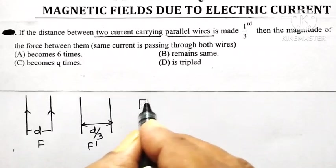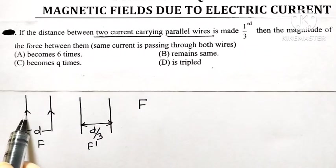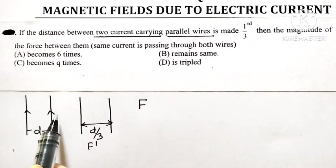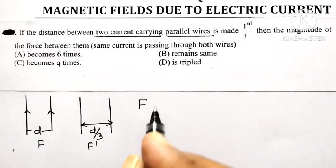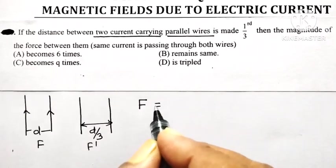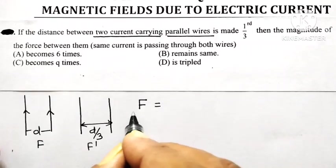So force per unit length when two parallel conductors carrying current, they are separated by a distance d, is equal to what is that force per unit length?